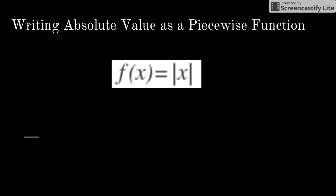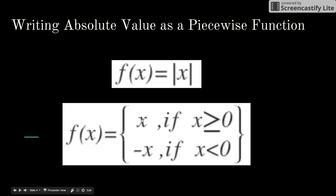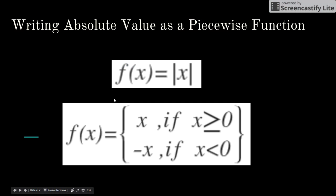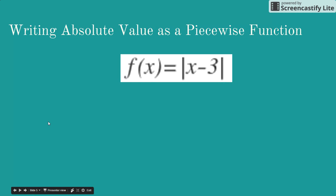To write this as a piecewise function: if x is greater than or equal to zero, the x values stay the same, because absolute value of x and y = x are identical for positive inputs. If x is less than zero, you negate the input values, so all those negative inputs become positive. Traditionally you put the equal sign on the x ≥ 0 piece, because plugging zero into the negative piece gives negative zero, which is a bit awkward.